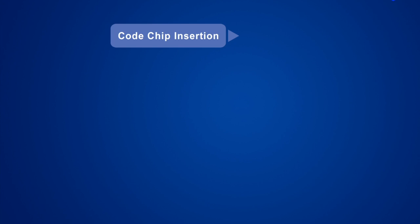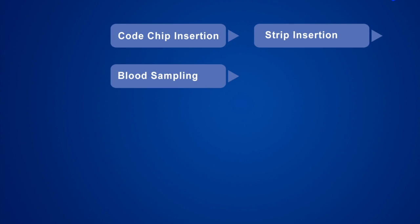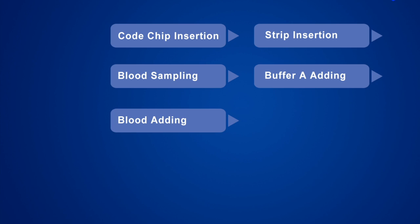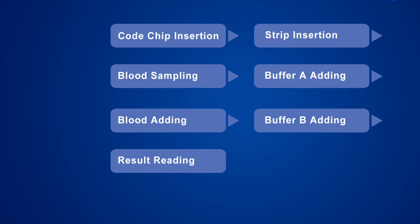The testing procedure consists of the following steps: code chip insertion, strip insertion, blood sampling, buffer A adding, blood adding, buffer B adding, and result reading.